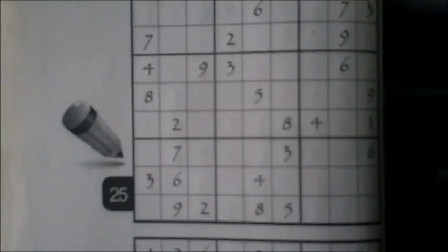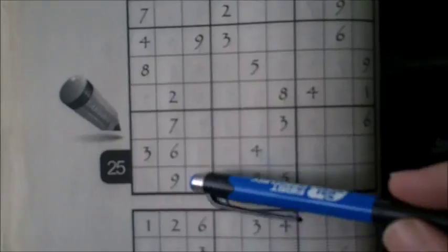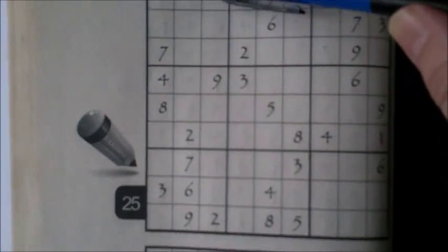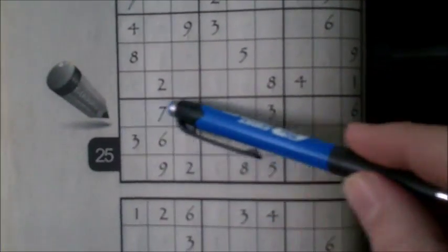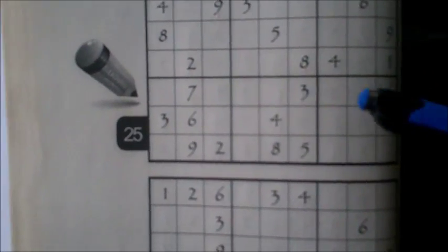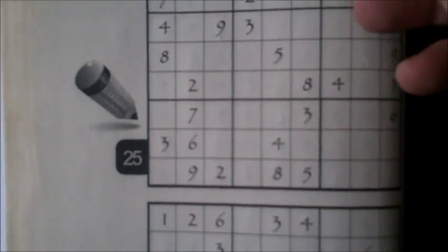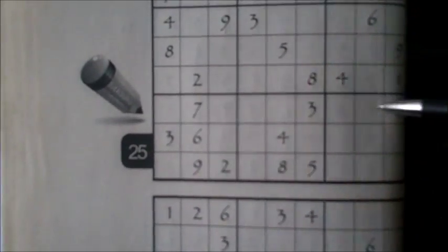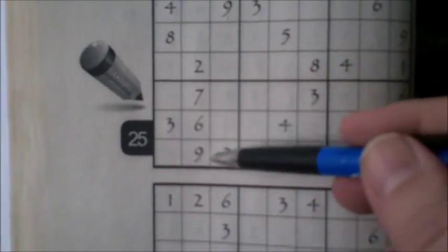Now what you've got to do is the numbers one through nine have to go this way, this way, and in the block. You can't have the same number in the same line and in the same block twice.